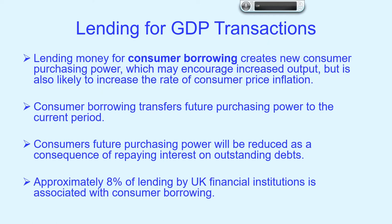The other type of lending for GDP transactions is lending for consumer borrowing. The quantity theory of credit proposes that this creates new consumer purchasing power, which may encourage firms to increase output due to the additional demand. But initially, it is also likely to increase consumer price inflation as output is fairly fixed. A significant increase in consumer demand causes firms to be unable to meet demand, and companies ration demand by raising prices.